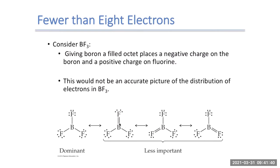We can verify this by looking at the formal charge. Boron is in column three, so it has three valence electrons. With four bonds and zero lone pairs, that gives a formal charge of negative one for the boron in those structures.